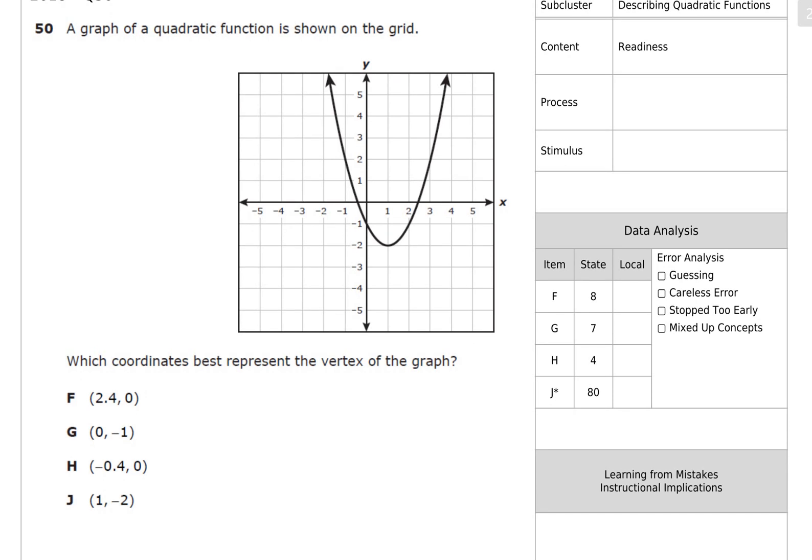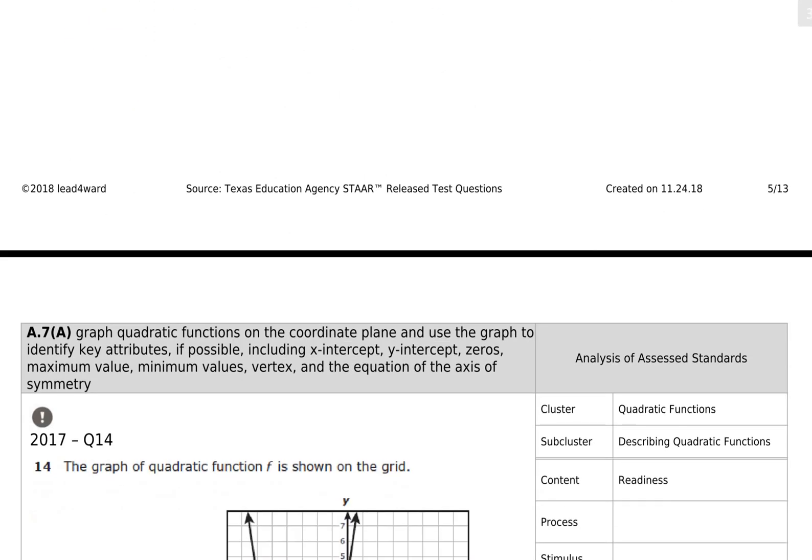Graph of a quadratic function shown on the grid. Which coordinates best represent the vertex? Vertex, once again, easy if you know the vocabulary. Vertex is that point. What is the coordinate of that point? Over one, down two. X, comma, Y. One, negative two. Answer is J. You see how simple, quick, and easy these are if you know the vocabulary.